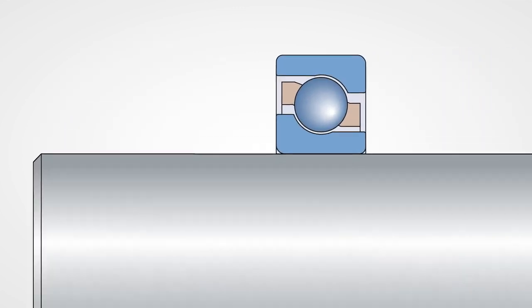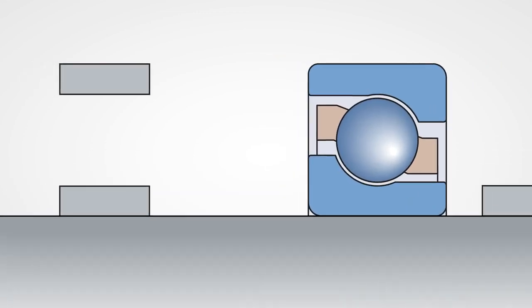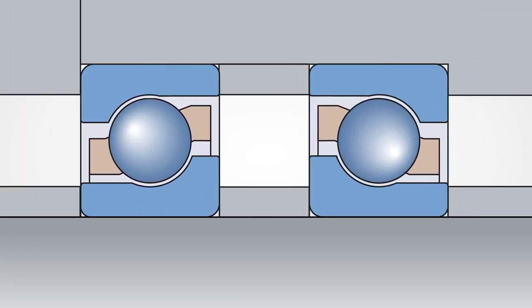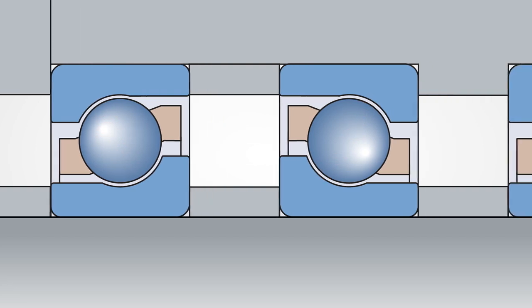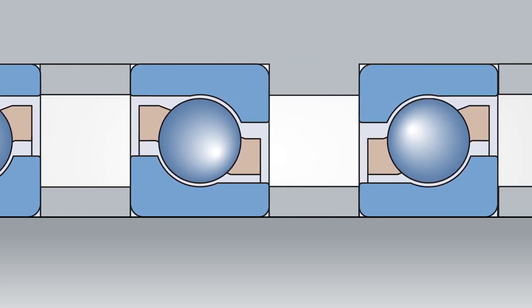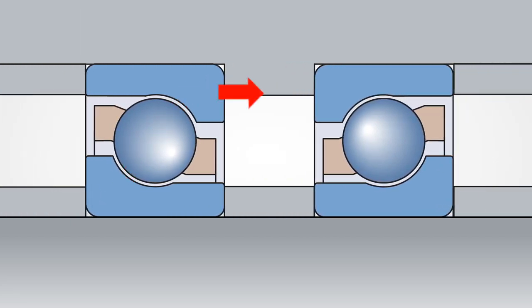Single row angular contact ball bearings can accommodate an axial load acting in one direction and therefore they must always be used in pairs in face-to-face or back-to-back configuration. The resulting setup will accommodate radial and axial loads in either direction.